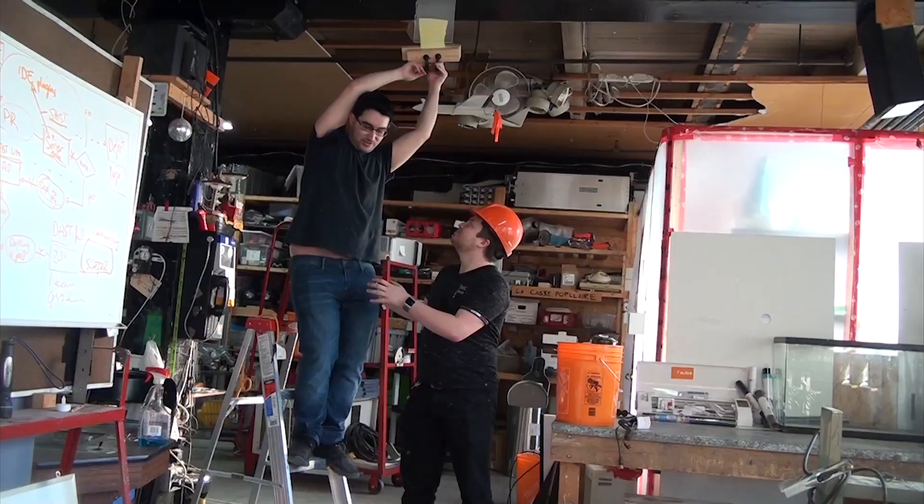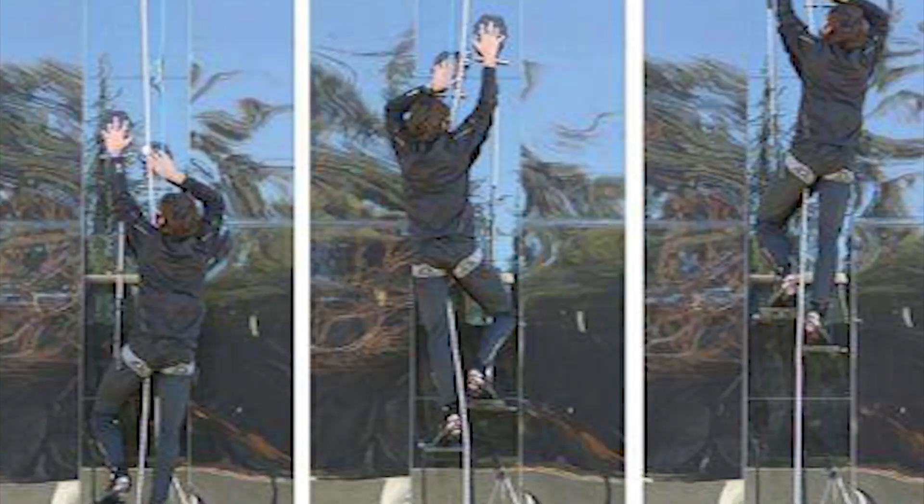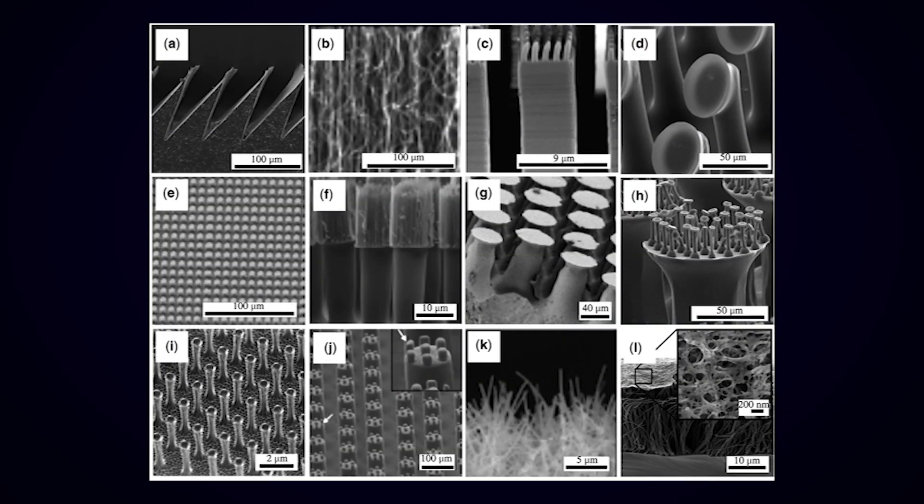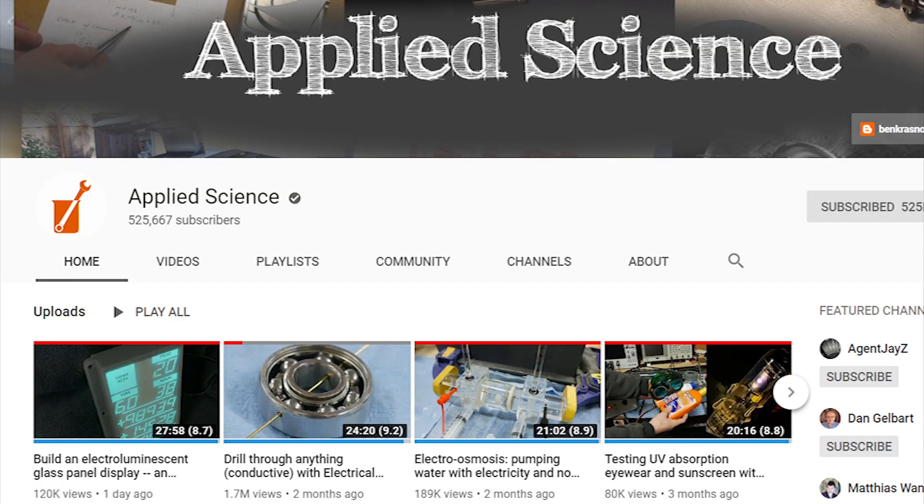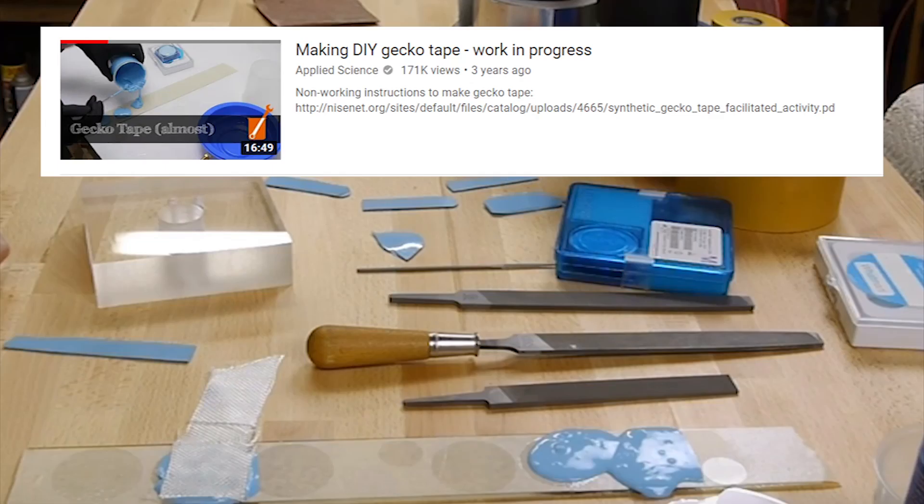So of course scientists wanted to figure out how to replicate this to make a giant version that people could use, and a lot of groups have had success with this. What got me interested though was a video a few years ago that Ben over at Applied Science made. In it he showed some attempts to make gecko tape, but in the end wasn't successful, and I've always wanted to give this a try myself.